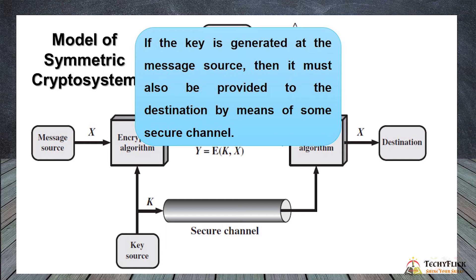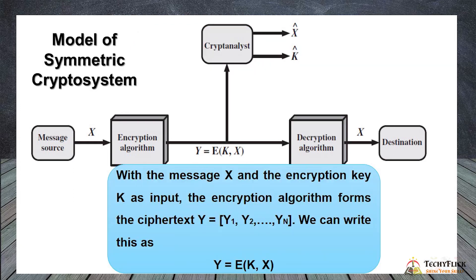If the key is generated at the message source, then it must also be provided to the destination by means of some secure channel. On the sender side, the key is generated. With the message x and the encryption key k as input — x on the left, k as the key — their values are used.